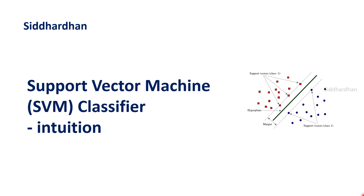Hello everyone, I am Siddhartha. Currently we are in the 7th module of our AMS on Machine Learning course and this 7th module is all about building machine learning models from scratch. In my previous videos I have explained the intuition and math behind linear regression and logistic regression models and how to build them from scratch in Python. The third model we are going to discuss is a support vector machine classifier. We will first understand the intuition behind it, and in upcoming videos I will explain the math and how to build this SVM model from scratch in Python.